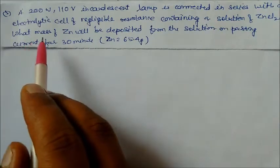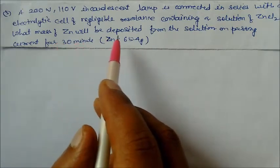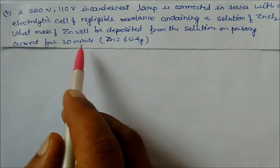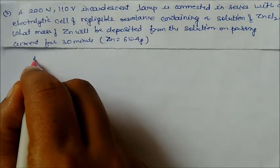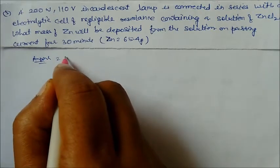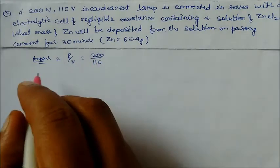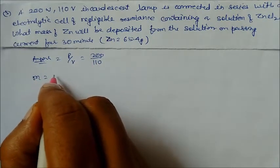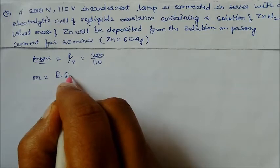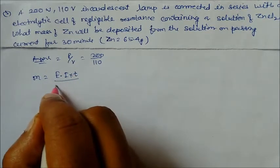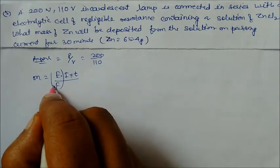Question 5: A 200 watt, 110 volt incandescent lamp is connected in series with an electrolytic cell of negligible resistance containing a solution of zinc chloride. What mass of zinc will be deposited on passing current for 30 minutes? First, find the current: I = Power / Voltage = 200 / 110. Now apply Faraday's law: m = (E × i × t) / 96500.